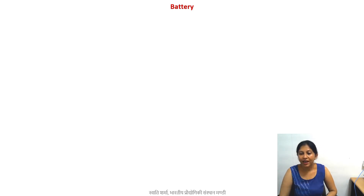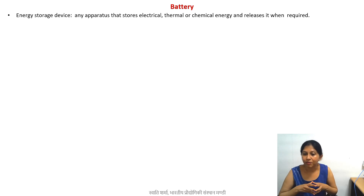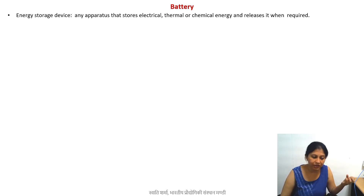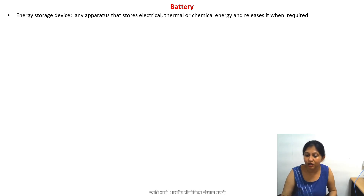In this lecture and the next lecture we are going to discuss energy storage devices. We have already talked about the energy production devices. Now let's briefly discuss the energy storage devices and their manufacture. A storage device, by definition, is any apparatus which can store a certain form of energy — it doesn't have to be electrical energy, it can be chemical energy or thermal energy — and it also releases it on demand. We will be discussing mainly the electrical energy storage devices.